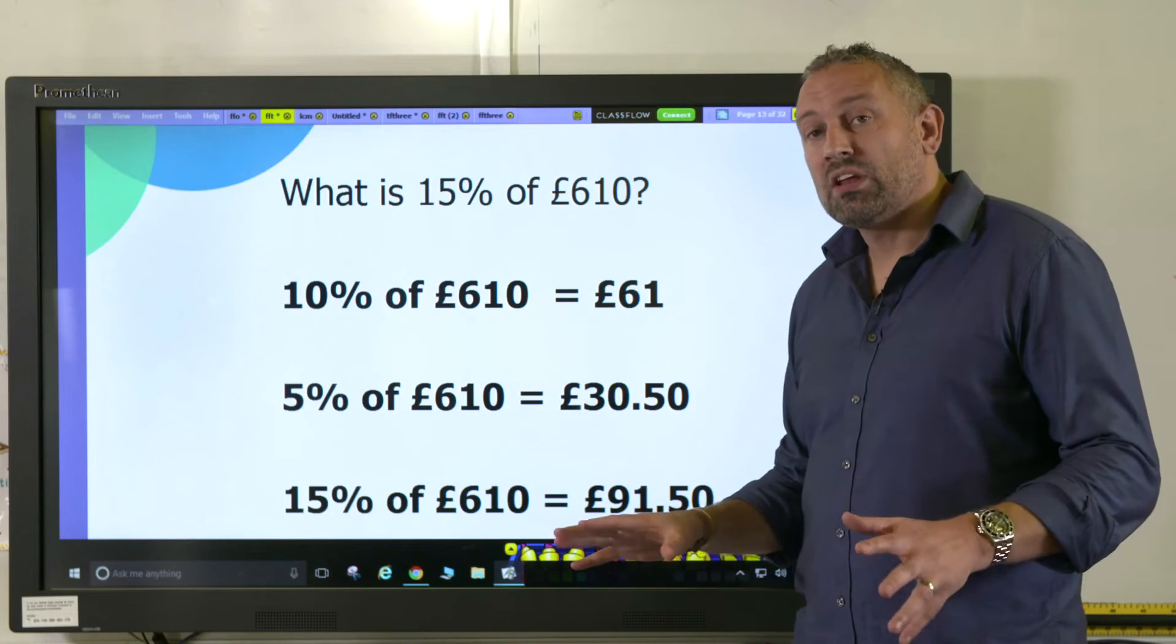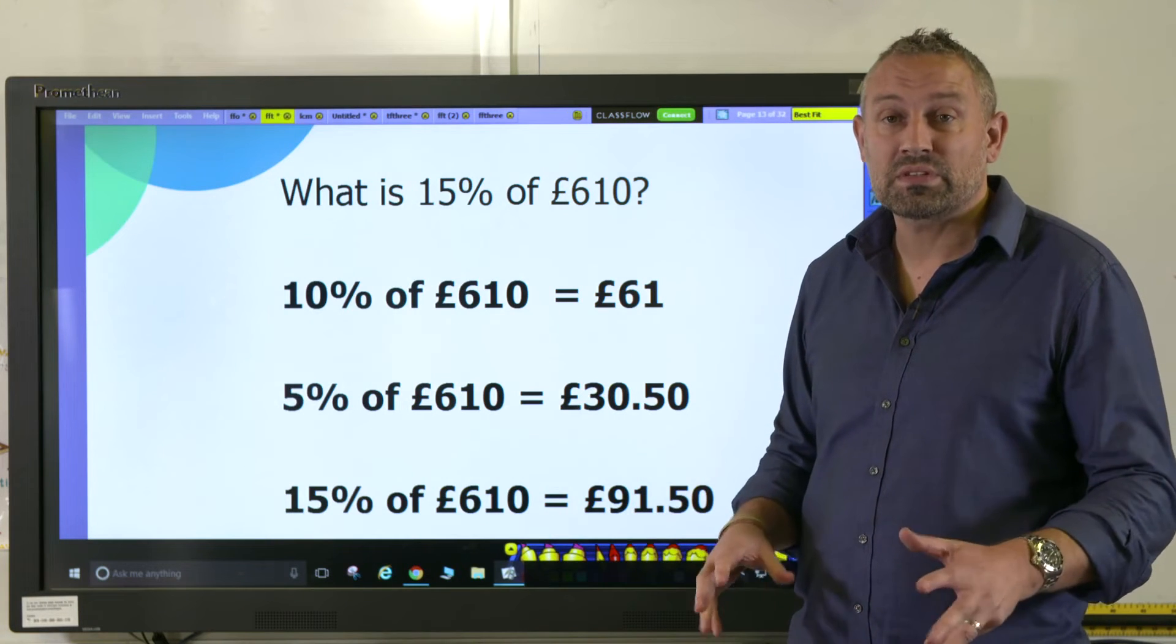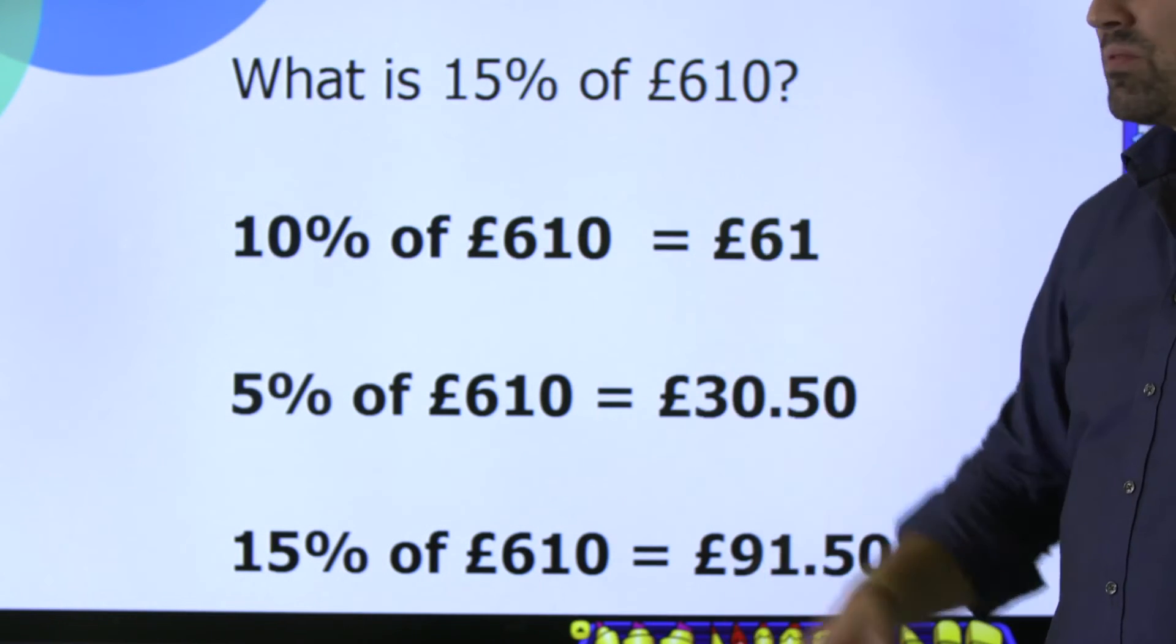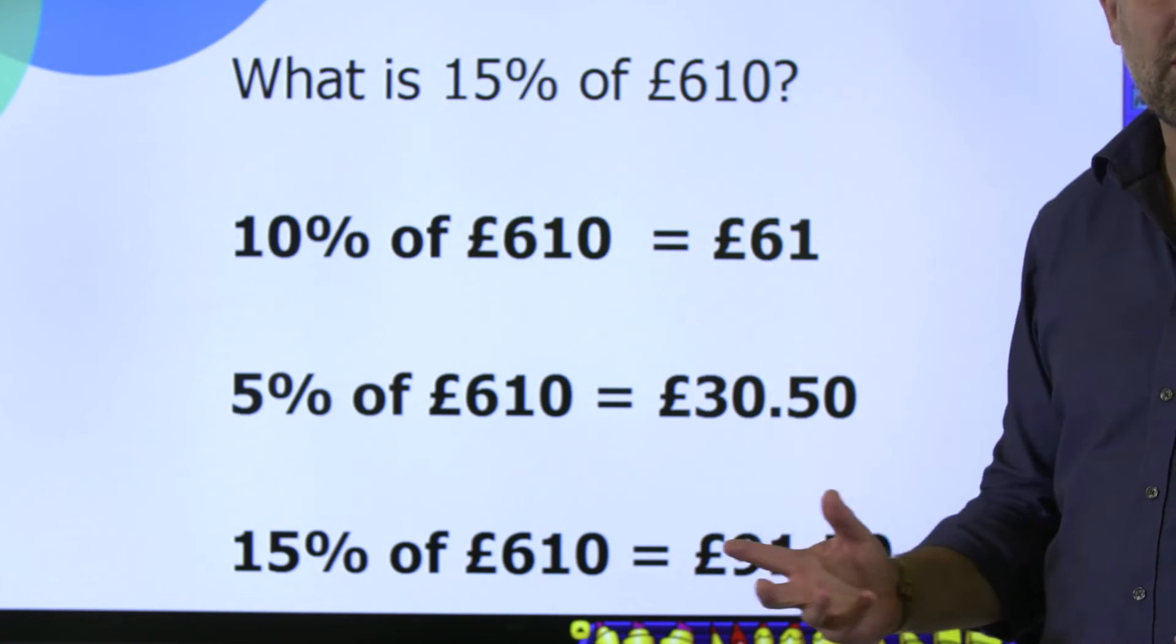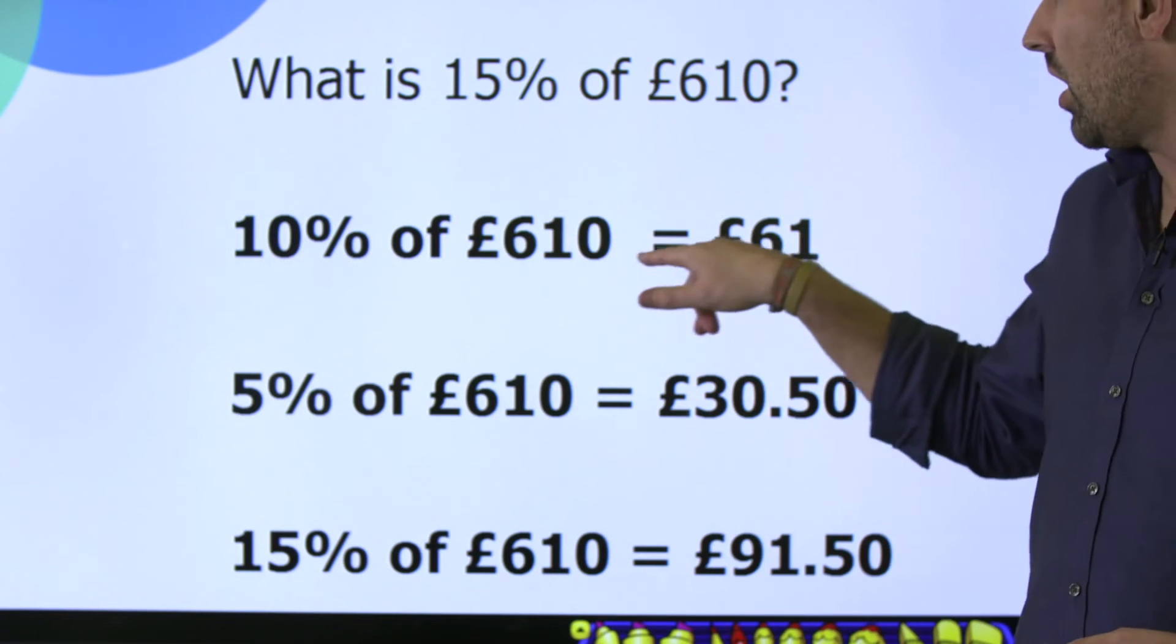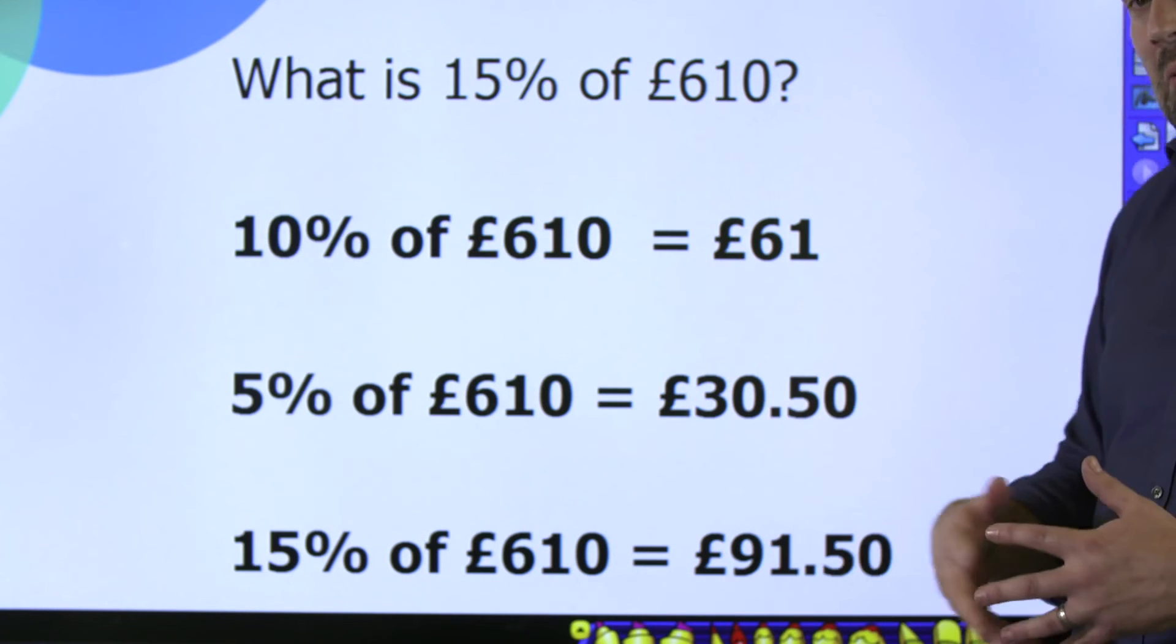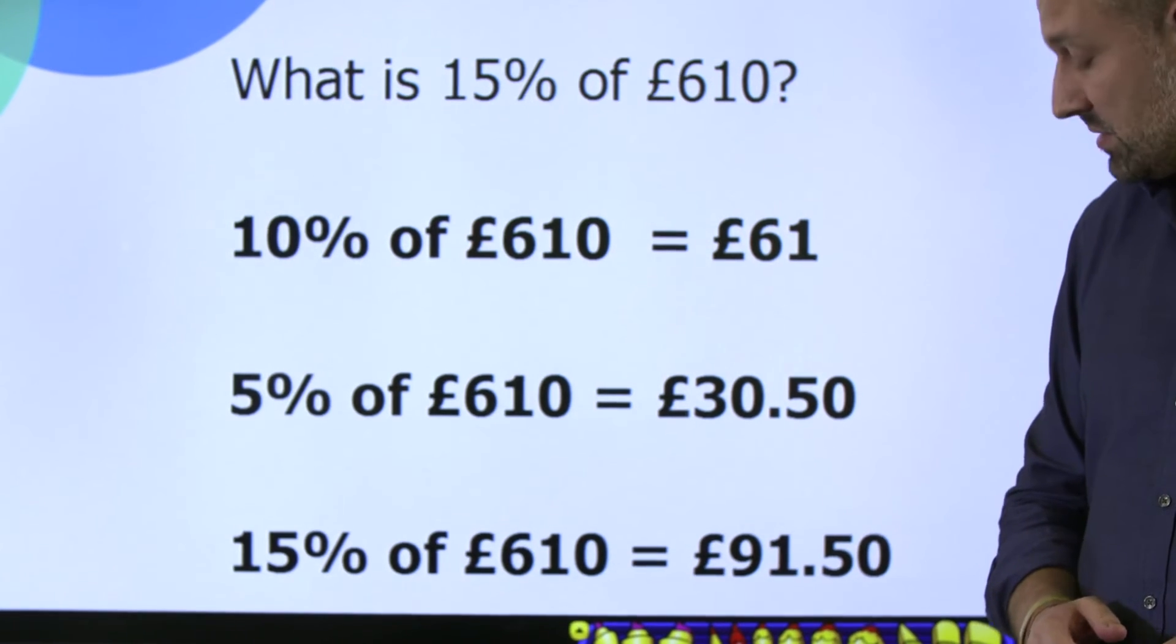This last question really stretches the children, getting them to apply their understanding of finding 10 percent and 5 percent. What is 15 percent of £610? We can partition 15 into 10 and 5, and first find 10 percent by dividing 610 by 10 to give us £61. Then halving the £61 to find 5 percent, which is £30.50, and then recombining them together to get 15 percent, which is £91.50.